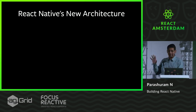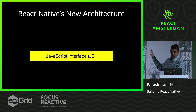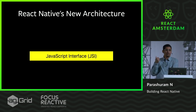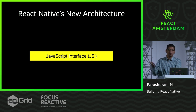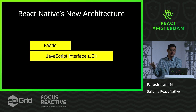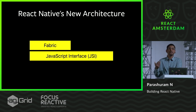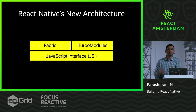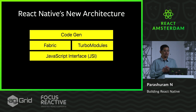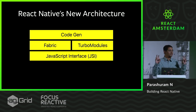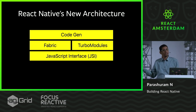To summarize: we spoke about JavaScript Interface, which is a way for JavaScript to communicate with native Java or Objective-C code. We spoke about Fabric, which is the new UI manager or UI layer in React Native. We spoke about Turbo Modules, the new way of calling native modules in React Native. And finally, we have all of this tied together using Code Gen. Whenever someone says the new architecture of React Native, this is probably what they're talking about.